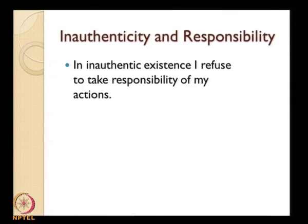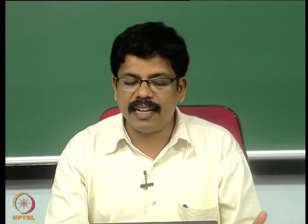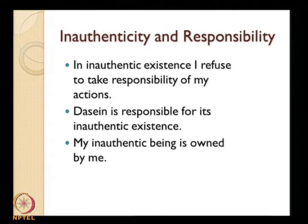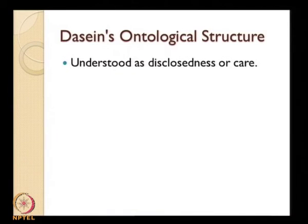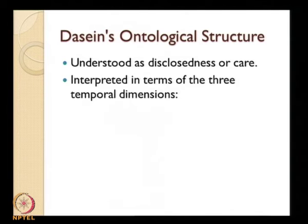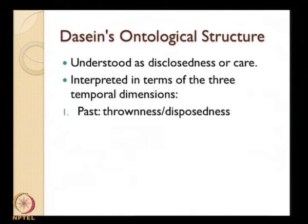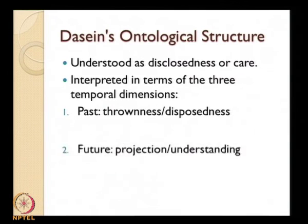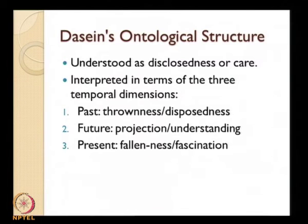In inauthentic existence, I refuse to take responsibility for my actions; Dasein is responsible for its inauthentic existence as well. In inauthenticity I do not take responsibility because it is the they — I am part of the they-self. But when I am myself, I have to take responsibility; the decisions are mine. My inauthentic being is also owned by me. Now let us see Dasein's ontological structure, understood as disclosedness or care, interpreted in terms of three temporal dimensions: past — thrownness or dispositeness; future — projection and understanding; and present — fallenness or fascination.